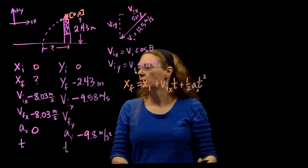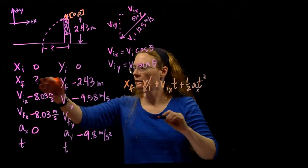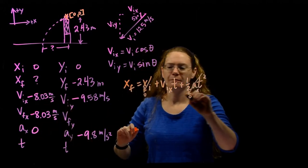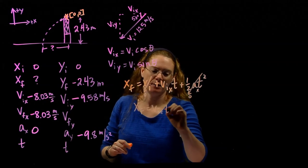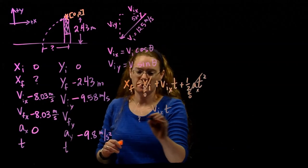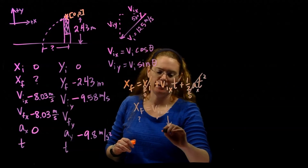Is there anything that's 0? x initial is 0. That goes away. And a is 0. I'm left with x final equals v initial x t. I'm looking for this. I know this. I need to know what my time is.